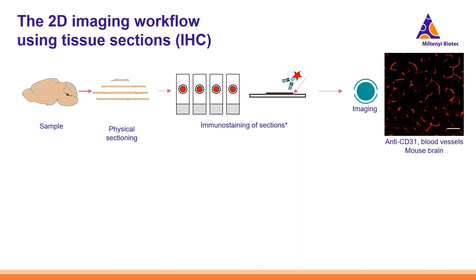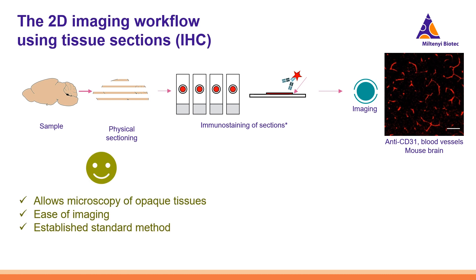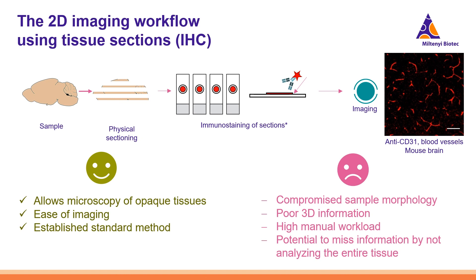In typical 2D imaging techniques, the process involves sectioning a sample and staining the section and imaging them using, for example, confocal microscopy. There are some advantages in 2D imaging, such as the ability to image opaque tissues without need for tissue clearing, and the availability of well-established standard 2D imaging methods. But there are significant limitations: by relying only on 2D imaging, a substantial amount of valuable information is lost — including crucial information related to structural complexity, depth, and spatial architecture.